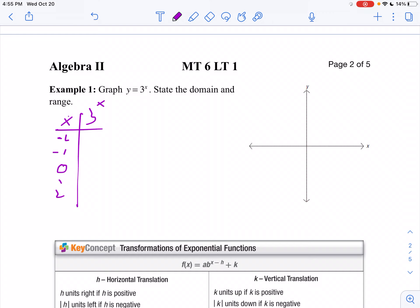Remember, anything to the zero power is one. So 3 to the 0 is 1, 3 to the first power is 3, 3 to the second power is 9. I stopped at 2 because now I'm going to get really big, like 3 to the third would be 27. 3 to the negative - remember, a negative exponent means reciprocal. So 3 to the negative 1 is 1 third and then 1 ninth.